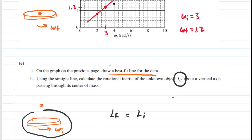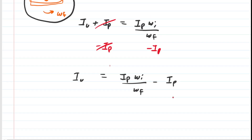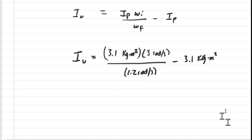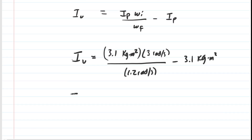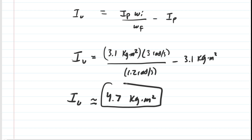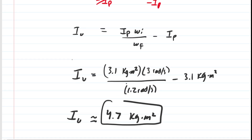Plugging in omega initial = 3 rad/s, omega final = 1.2 rad/s, and I_P = 3.1 into our equation, we get a rotational inertia for the unknown object of approximately 4.7 kilogram·meters squared. That is the correct answer to Part E.